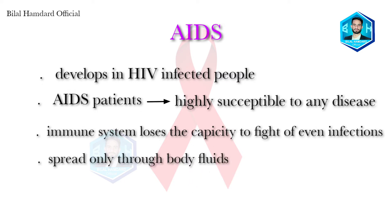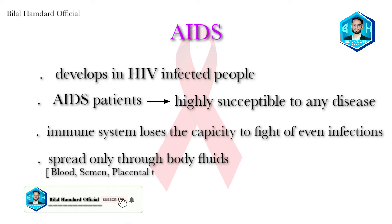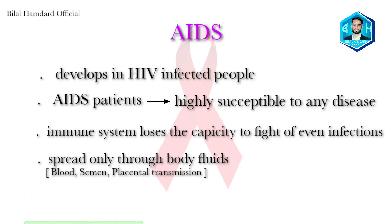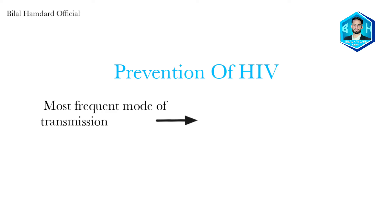How does this virus enter a healthy host? HIV has a tendency to stay active and spread only through body fluids, so it gets access to a healthy host body only through some form of body fluid, including blood, semen, and placental transmission. As often said, prevention is better than cure — this is very much true in the case of AIDS, as there is no cure once the disease reaches a particular stage.